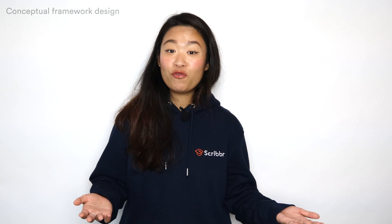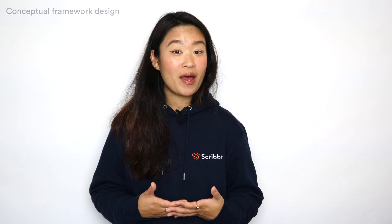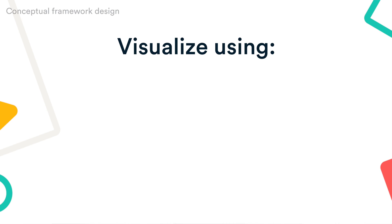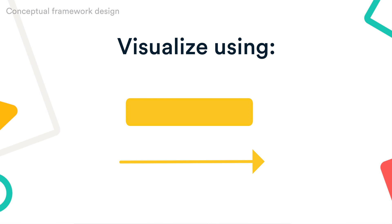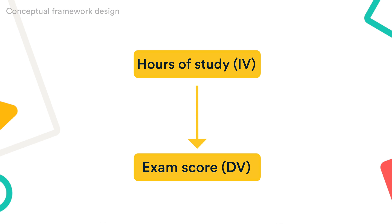A conceptual framework can be designed in many different ways. The form yours takes will depend on what kinds of relationships you expect to find. To visualize our expected cause and effect relationship, we will use the basic design components of boxes, arrows, and lines. We use the boxes for the variables, and an arrow starting from the independent variable to indicate a causal relationship.